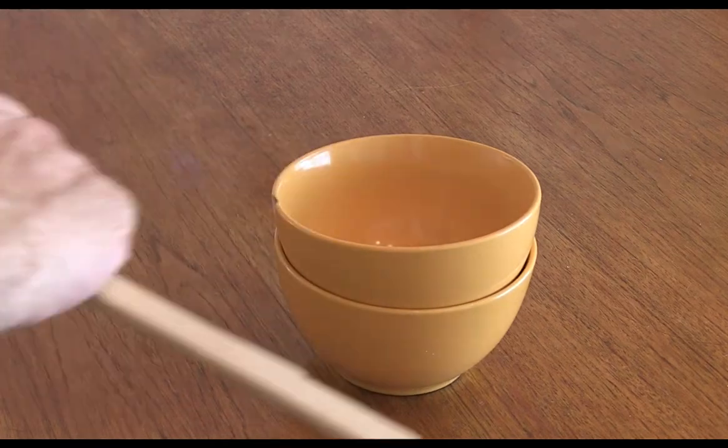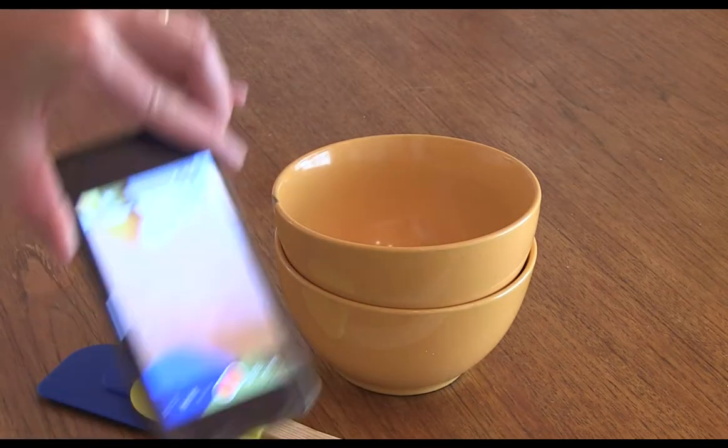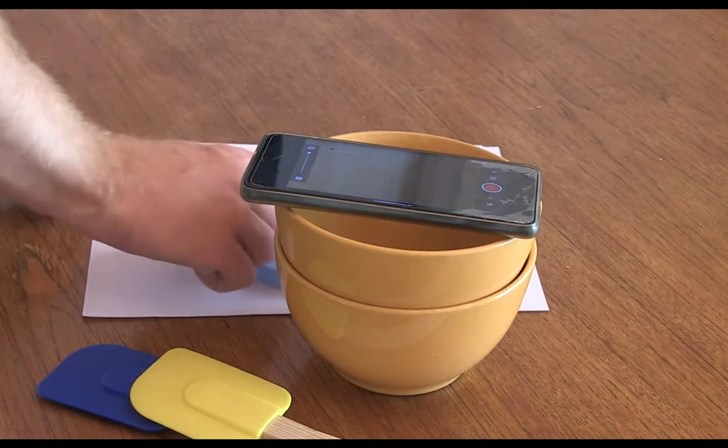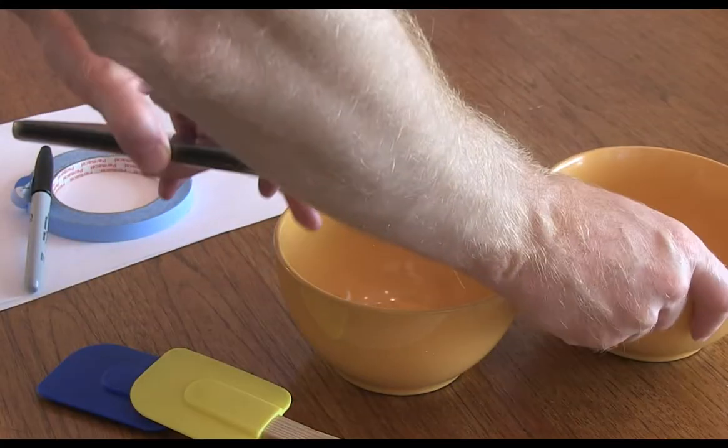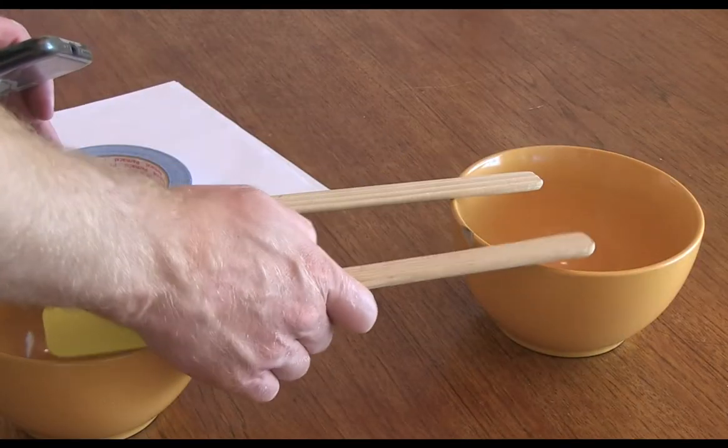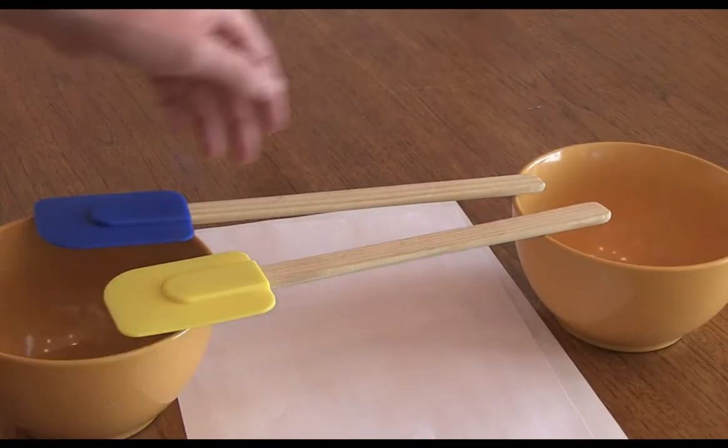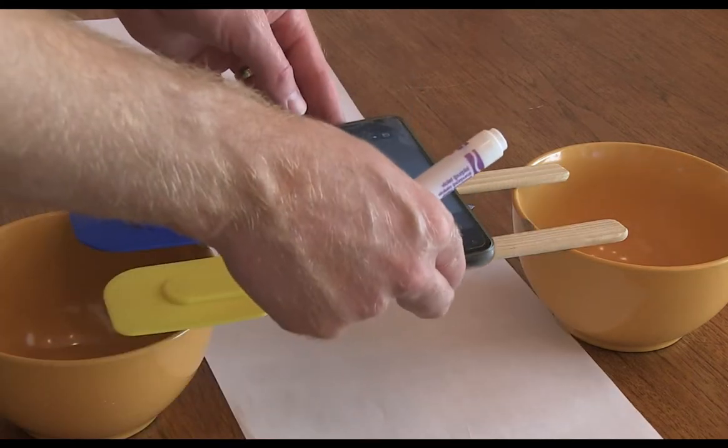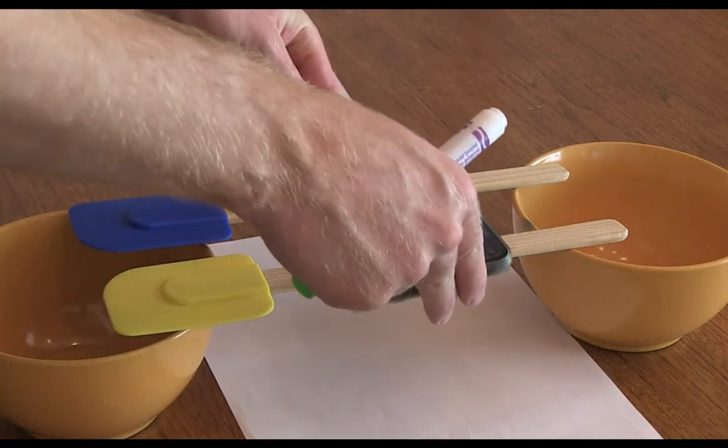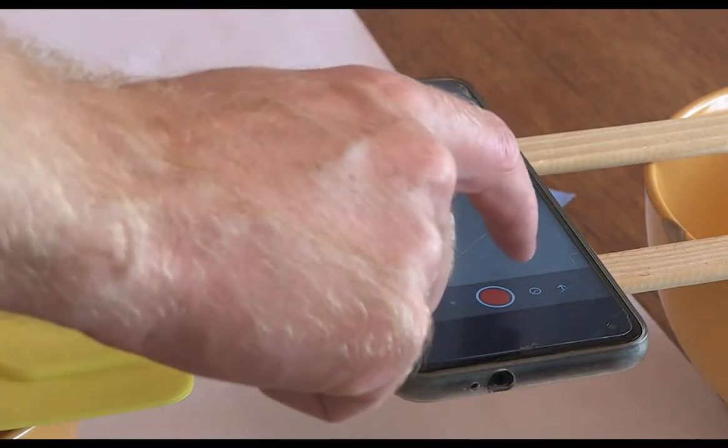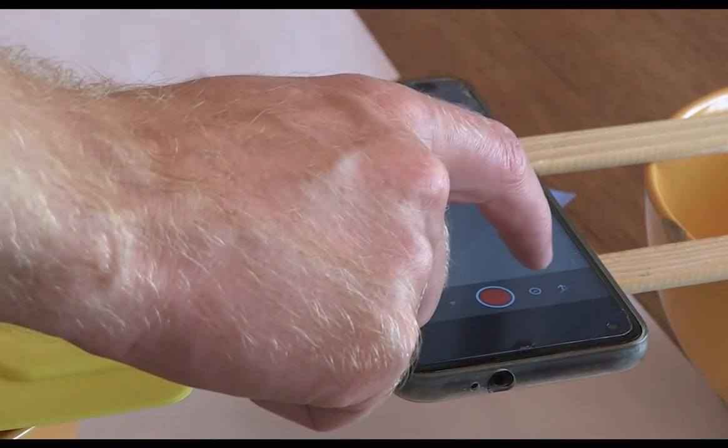If you don't have an iPad don't worry. Cell phones can also be used to animate and they work well and they're lightweight and easy. So for my example I'm setting up a very simple animation stand using some spatulas and soup bowls. And again it's the same principle where I'm doing top down animation where cameras above and I'm working below.